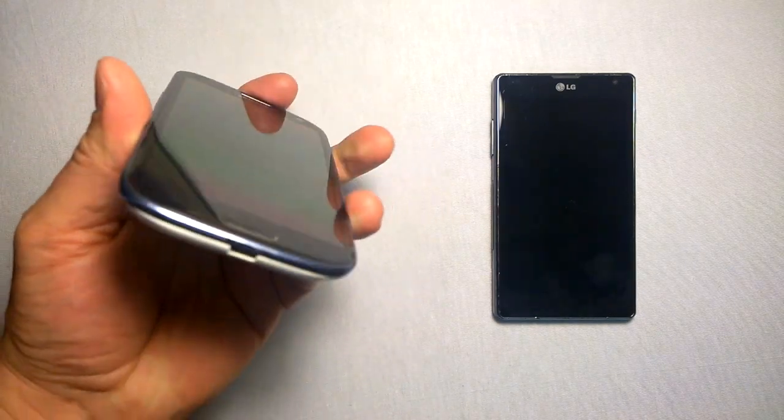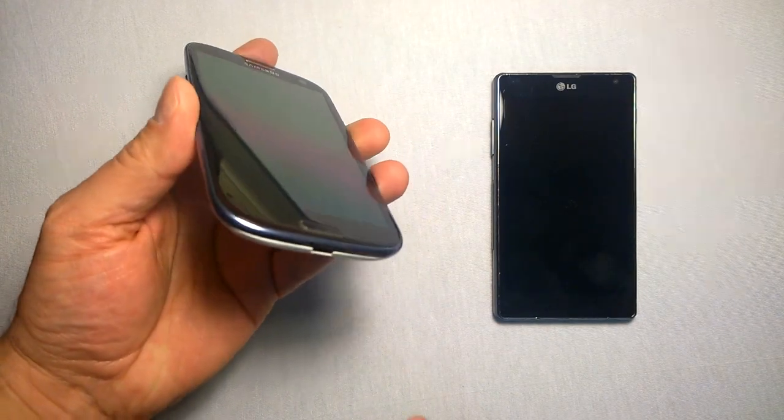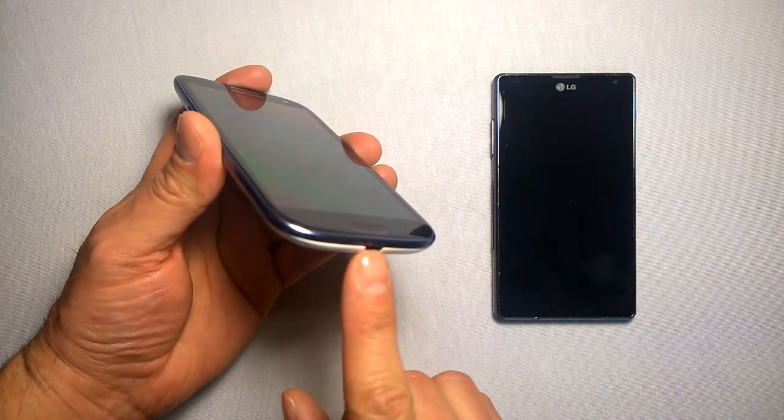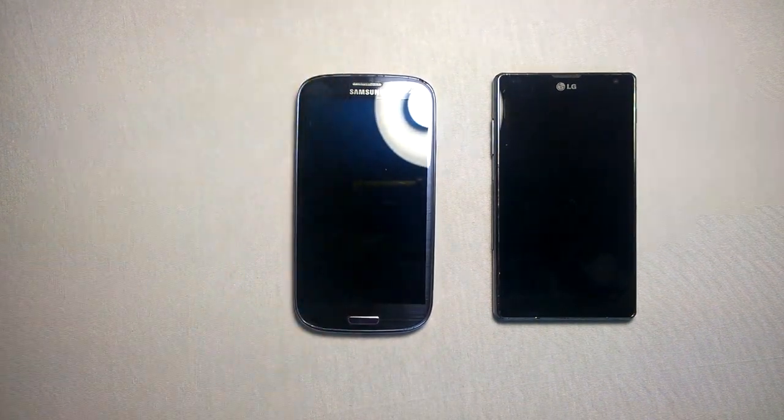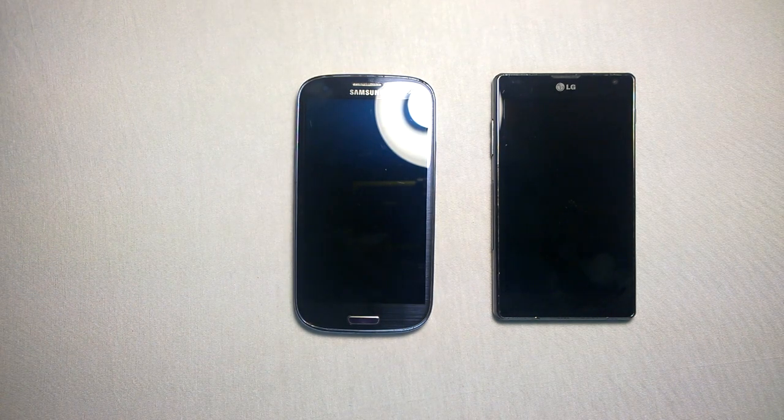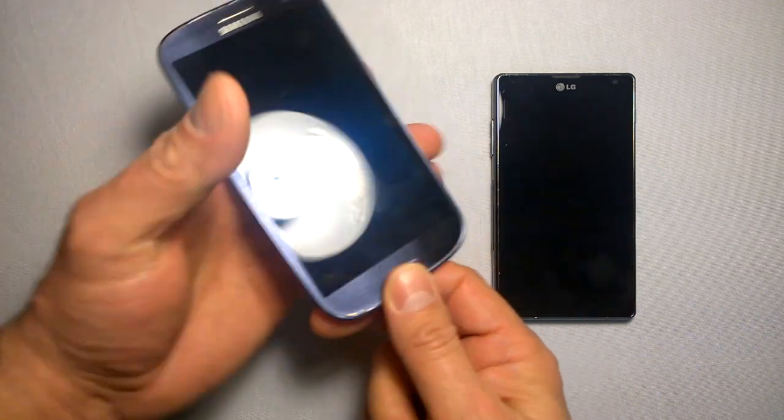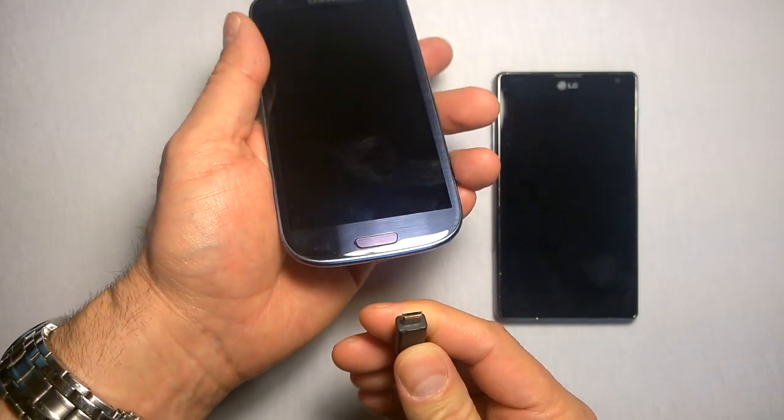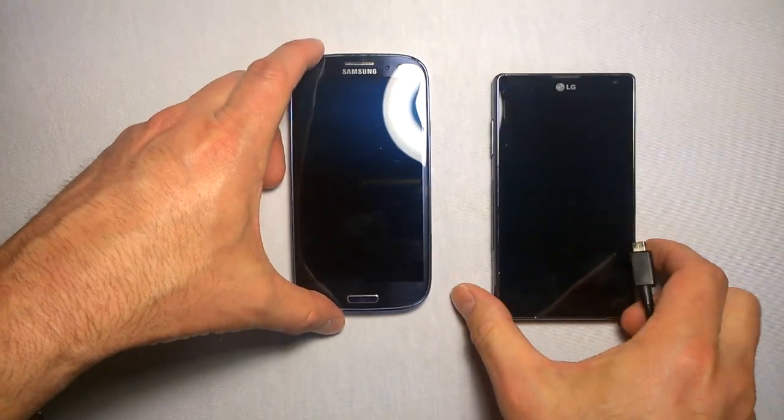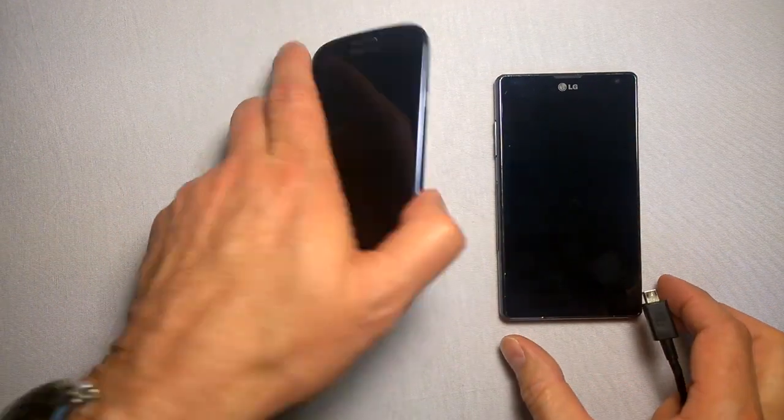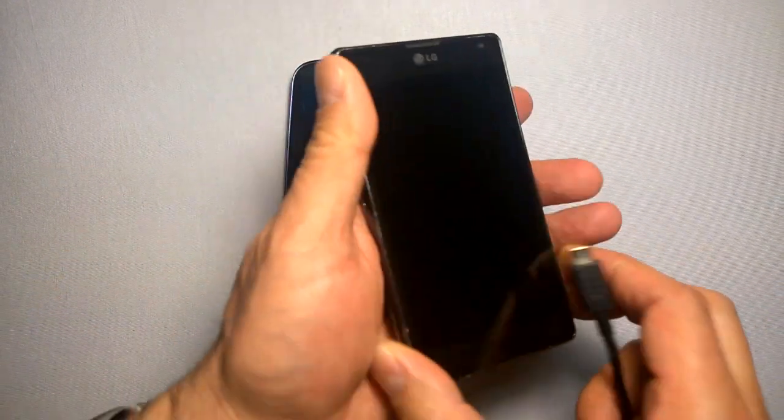One very common problem for the Galaxy S3 and a lot of the Galaxy series from Samsung is that they end up getting damaged in the charging port mechanism or area. These are very susceptible to liquid damage, prone to physical damage just because of the way they're designed. It's almost as if they are designed to fail. Fortunately with Samsung, you can remove the battery and use the charger.